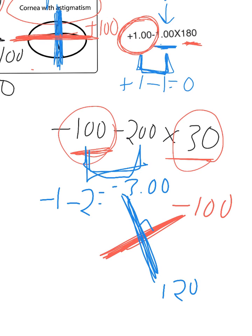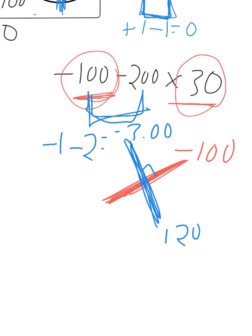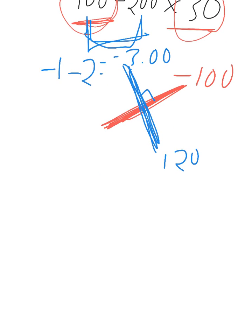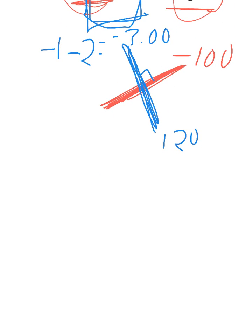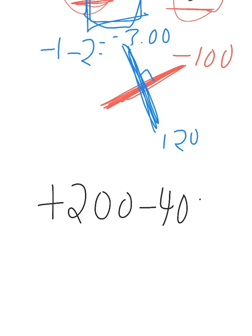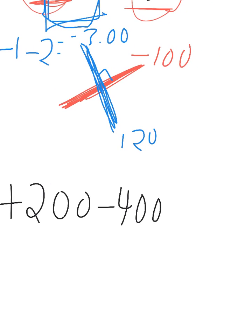Okay, let's do another one. This time I'll give you the prescription but I won't tell you the answer — I want you to figure this out by yourself. I want you to write the optical cross of a prescription of plus two, minus four, at axis 45.